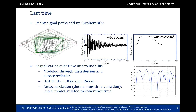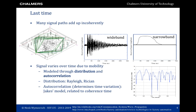Recall from last time that we considered channels between a transmitter and a receiver with multiple paths. When the receiver had a large bandwidth, we could resolve all of these paths in the delay domain — we would see something as shown in the middle. When the receiver has a small bandwidth over the same channel, we would see everything lumped together, and this would be narrowband communication.